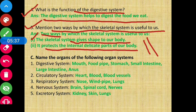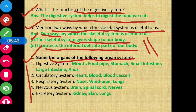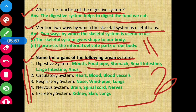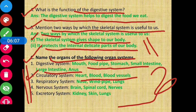Section C: Name the organs of the following organ systems. First, the digestive system — its organs are: mouth, food pipe, stomach, small intestine, large intestine, and anus. Next, the circulatory system — its organs are: heart, blood, and blood vessels.